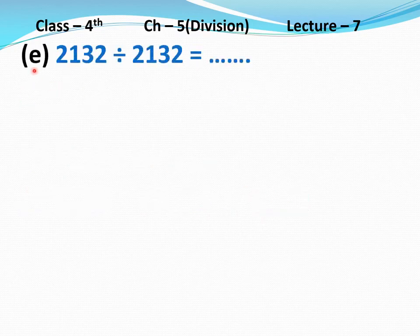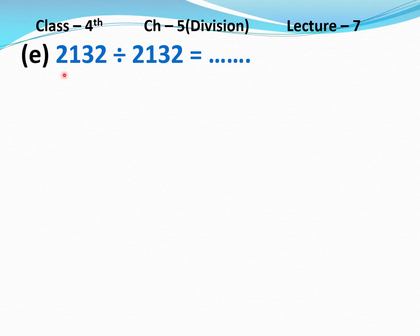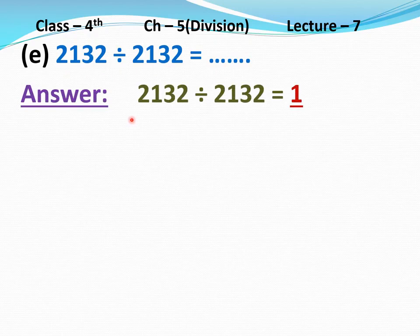Part E: 2132 divided 2132 equal to dash. If you are dividing any number by that same number itself, then you will get 1 as the quotient. Answer: 2132 divided 2132 equal to 1.